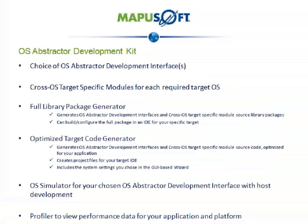The OS Abstractor Development Kit includes your choice of OS Abstractor Development Interface or interfaces, a cross-OS target-specific module for each required target OS, and a full library package generator to generate OS Abstractor Development Interfaces and cross-OS target-specific module source library packages that can be built and configured in an IDE for your specific target. It also includes an optimized target code generator, project files for your target IDE, and system settings from the GUI-based wizard. Also included is a license key to OS PAL's OS Simulator for your chosen OS Abstractor Development Interface for host development, and the profiler to view performance data for your application and platform.